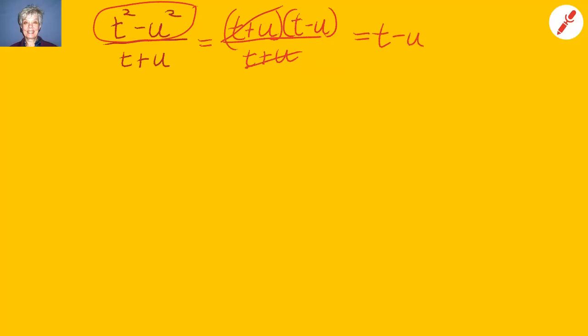Now what? T squared minus u squared over t plus u. Factor, factor, cancel, cancel. This is the difference of two squares. So this will factor into t plus u times t minus u, all that over t plus u. Now the t plus u and the t plus u cancel, leaving me with t minus u.